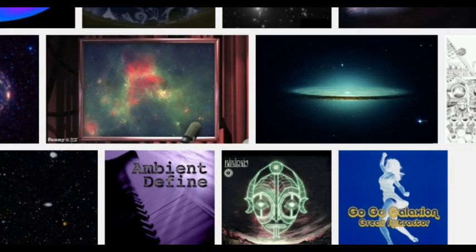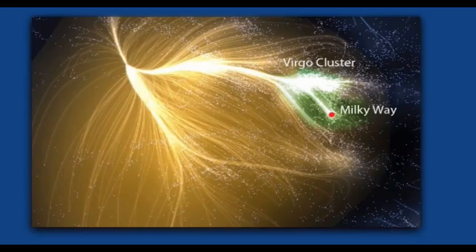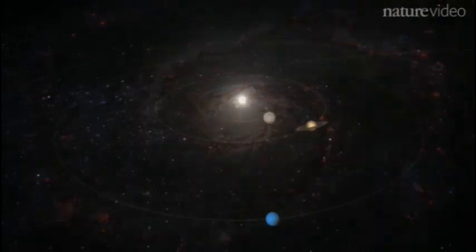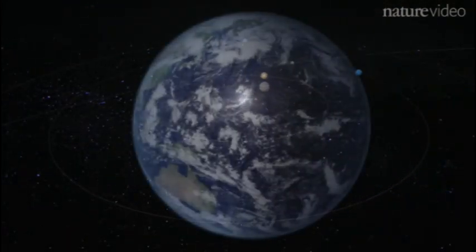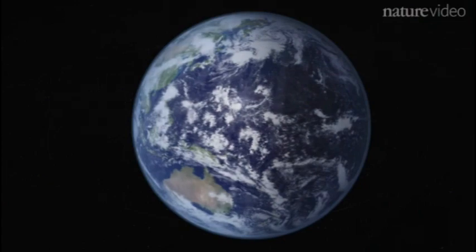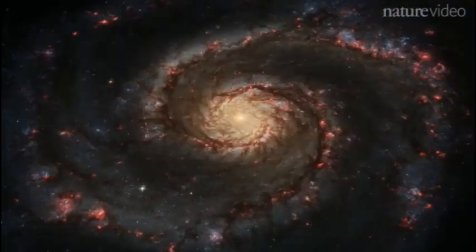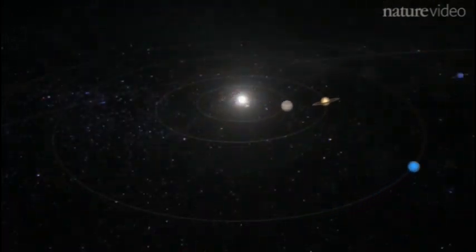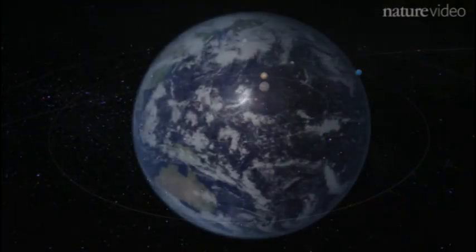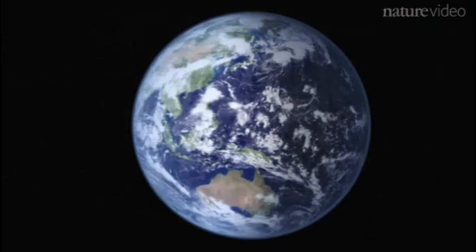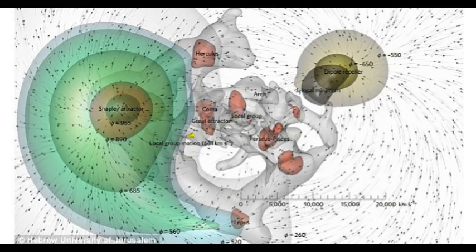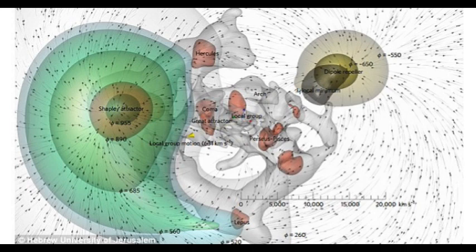Although we can't feel it, we're in constant motion. Earth spins on its axis at about 1600 kilometers an hour. It orbits around the Sun at about 100,000 kilometers per hour. The Sun orbits our Milky Way galaxy at about 850,000 kilometers per hour. And the Milky Way galaxy, and its companion galaxy Andromeda, probably our parent, are moving with respect to the expanding universe at roughly two million kilometers per hour.